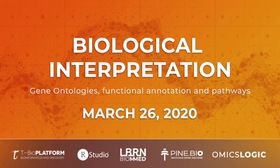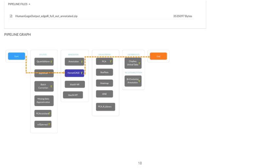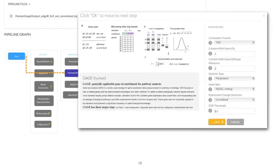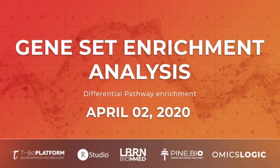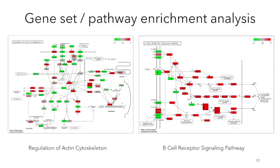Here, we will learn about various databases that are used to annotate our data and link it to functional properties found in gene ontologies and pathways. In this course, we will learn to utilize gene set enrichment analysis to find pathways or gene sets enriched with up- or down-regulated genes of interest.